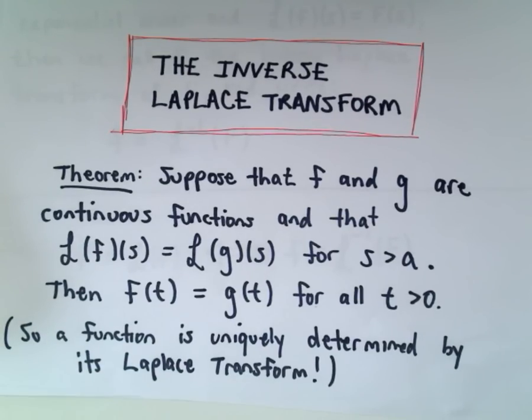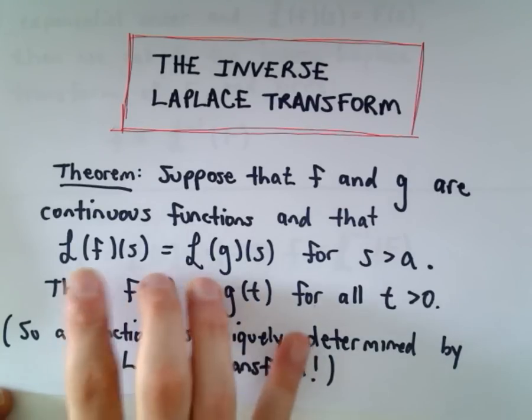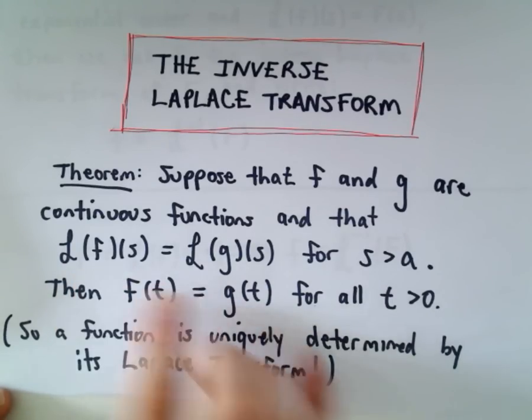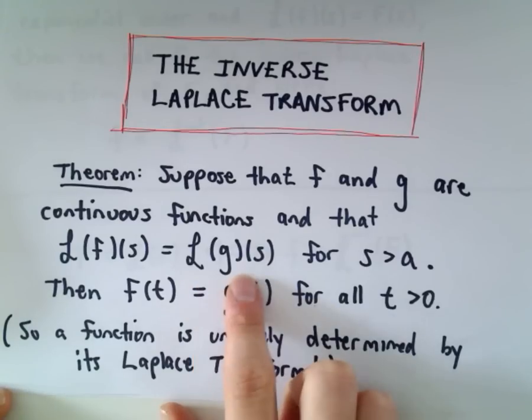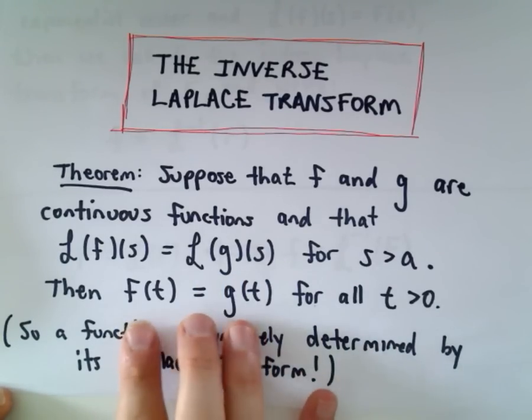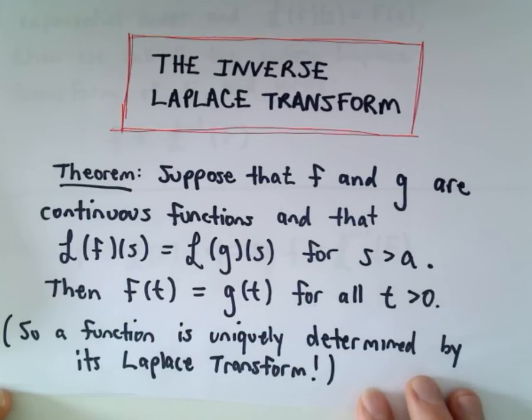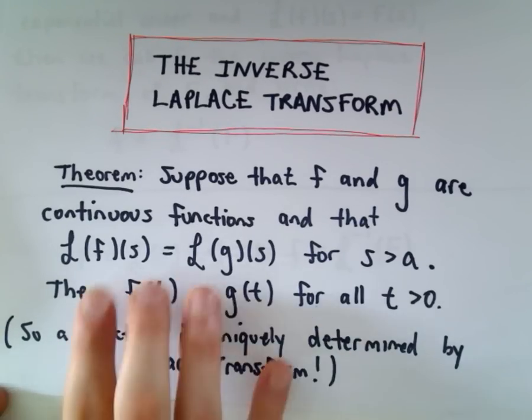An important theorem basically says what we're doing is legitimate. The theorem says suppose that f and g are continuous functions and that the Laplace transform of f(s) is equal to the Laplace transform of g(s) for s greater than a. Then those functions f and g are the same for all t values greater than 0.